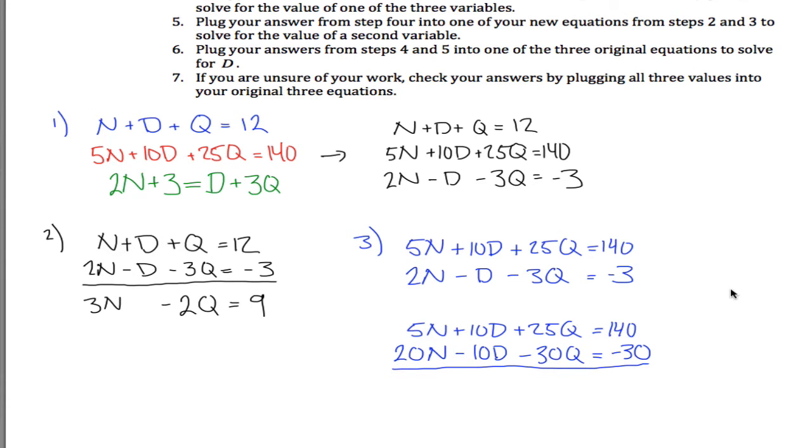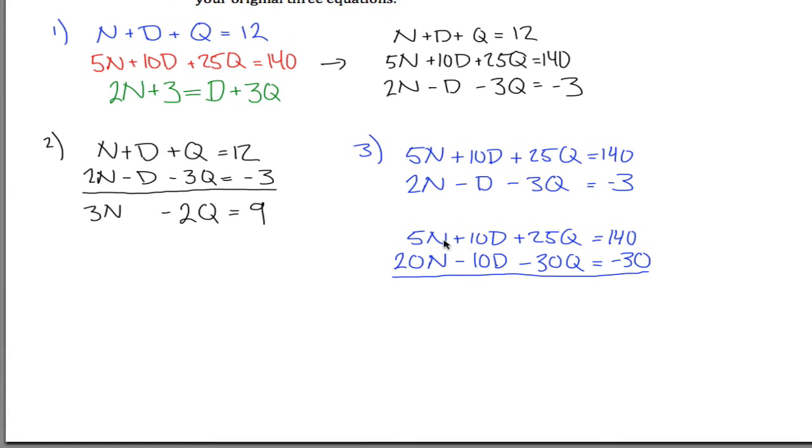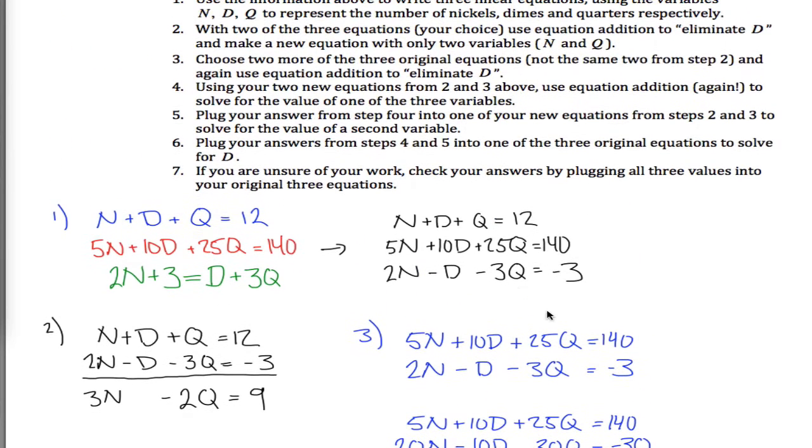So you have some freedom on how you do steps 2 and 3, but this is one way to do it. You add these up, you get 25N, and then the D's cancel out, and it looks like negative 5Q is equal to 110. I have to be a little bit more cautious of the space I have. I think that's the end of step 3.